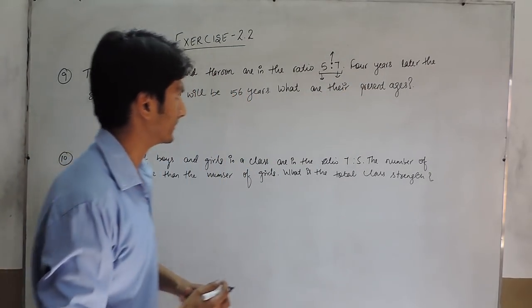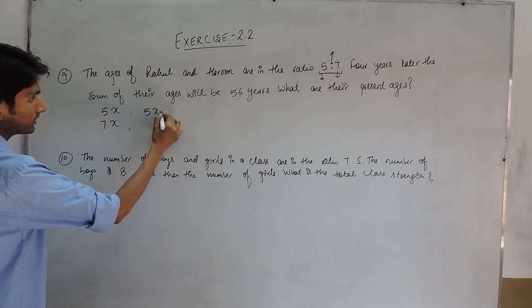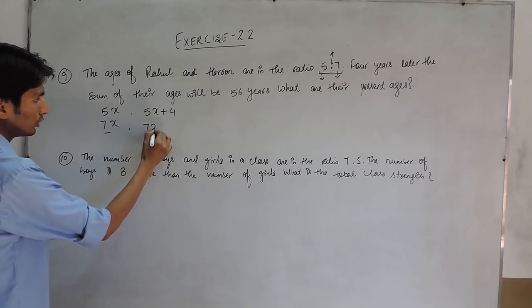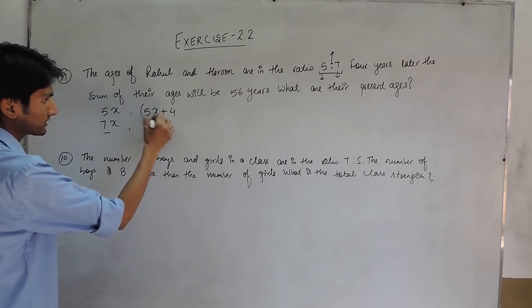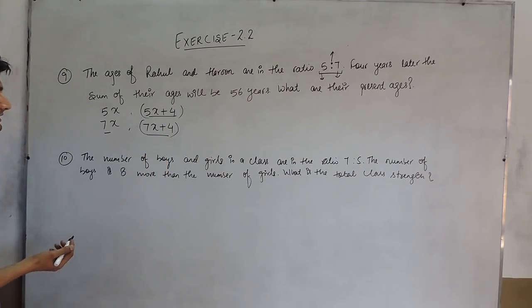And then four years later, after 4 years, Rahul's age would increase by 4 years and Haroon's age will also increase by 4 years. That means their new ages would be these two.